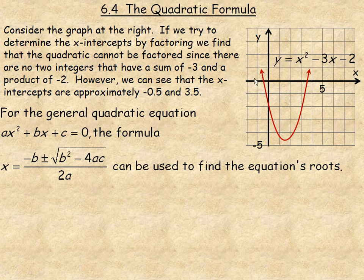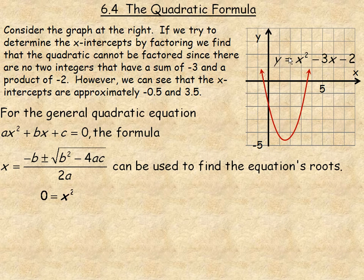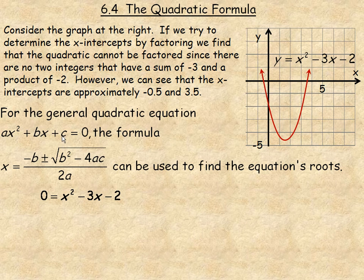Using the quadratic formula on our example, we want to find the x-intercepts. Remember, x-intercepts occur where y equals 0, so we set y to 0 and get the equation 0 equals x squared minus 3x minus 2. In this quadratic equation, a is the coefficient of x squared, b is the coefficient of the linear term, and c is the constant, so a equals 1, b equals negative 3, and c equals negative 2.